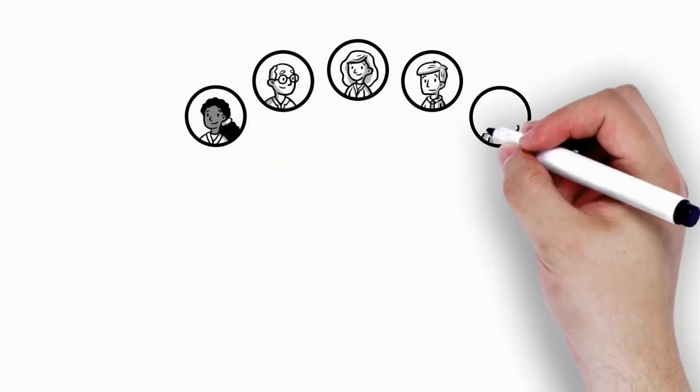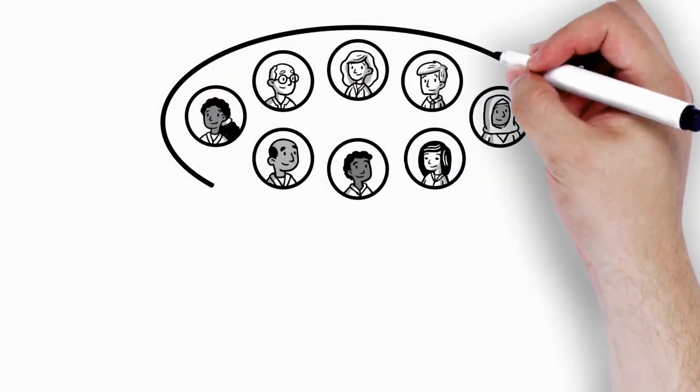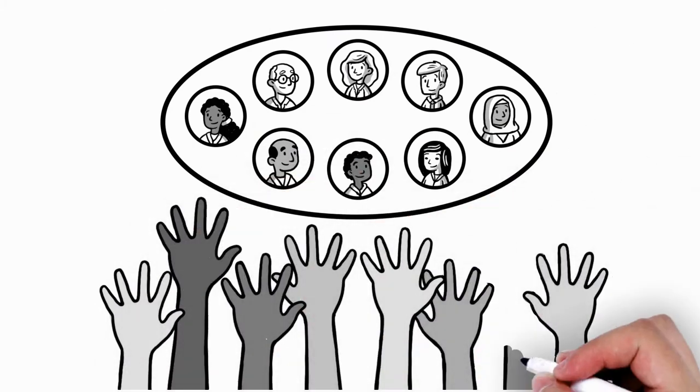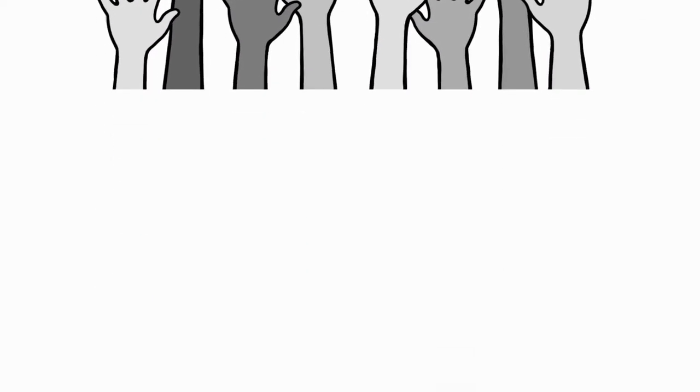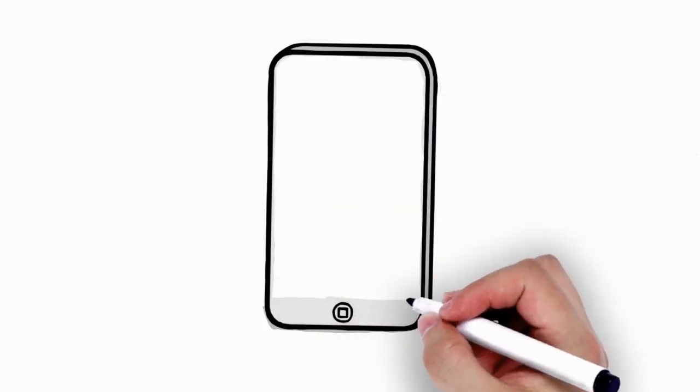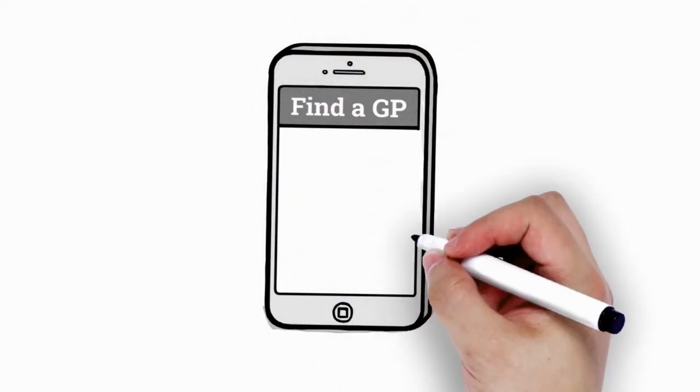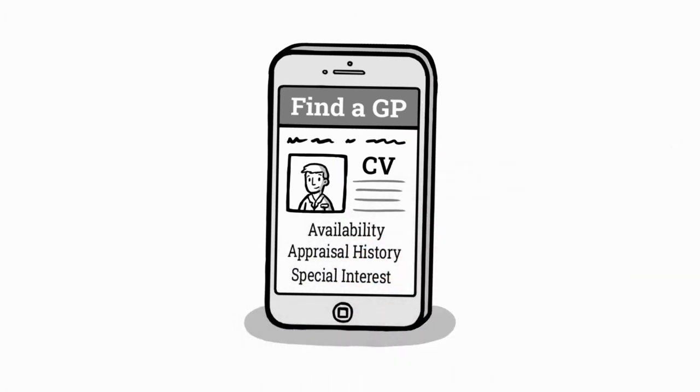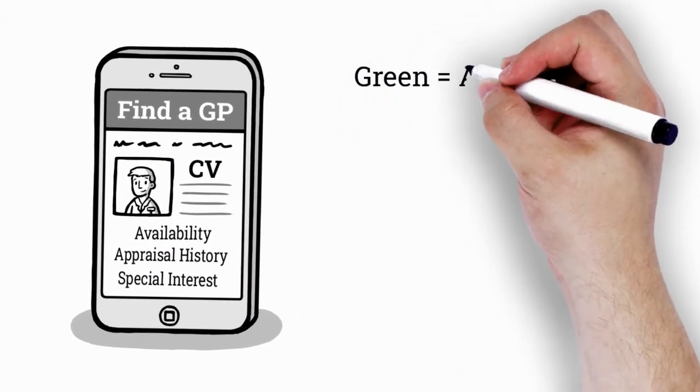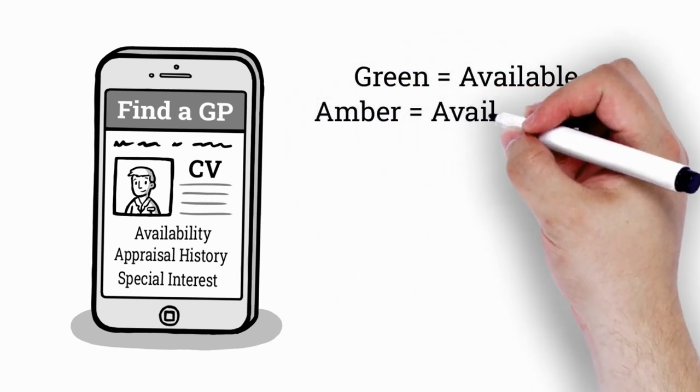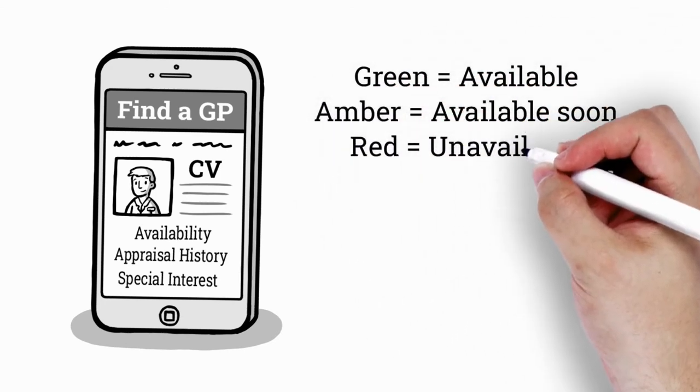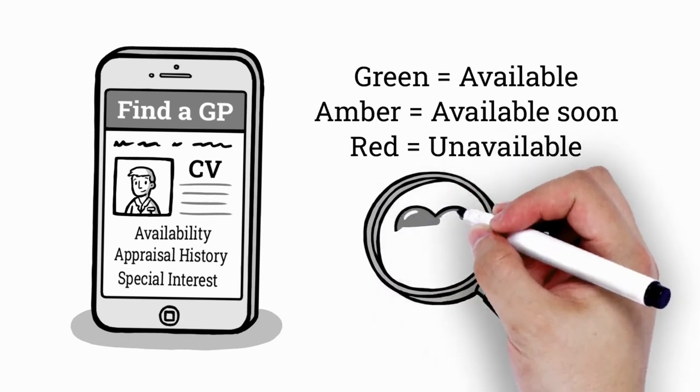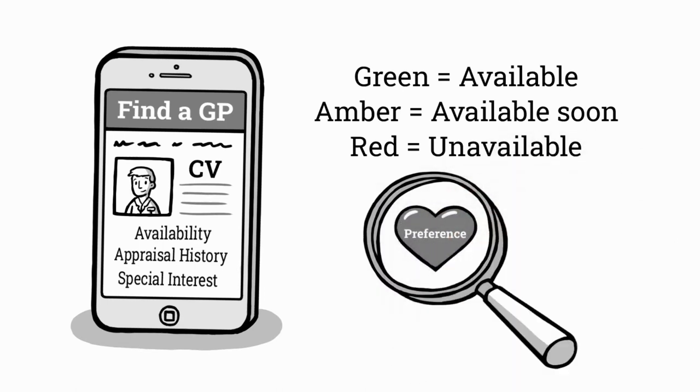Digital crowdsourcing GPs across traditional boundaries could increase availability, restoring to the workforce those taking time out for parenting and other reasons. An Uber-like smartphone app could indicate GP availability, curriculum vitae, appraisal history and special interest. The app could indicate green for available, amber for soon and red for unavailable, and a Tinder-like software platform could match patient preference with available healthcare providers.